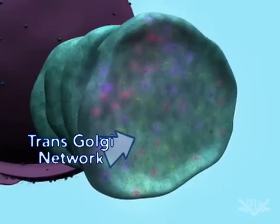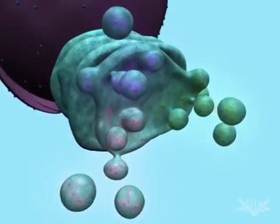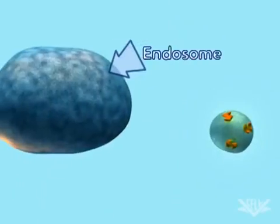Eventually, the cisterna will mature into the trans-Golgi network. From here, vesicles can deliver proteins to cellular locations such as the endosome or the cell membrane, where the proteins can be embedded or exported from the cell.